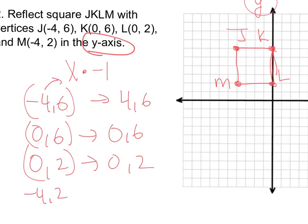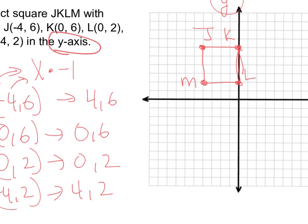Then I've got negative 4, 2. And if I multiply that one times negative 1, I'm going to get positive 4, 2. So my new shape is going to be these four points.